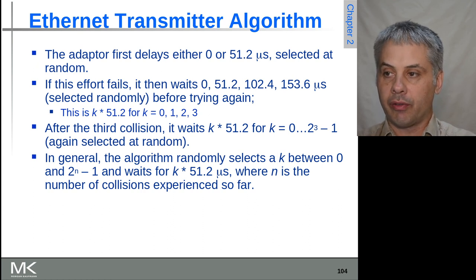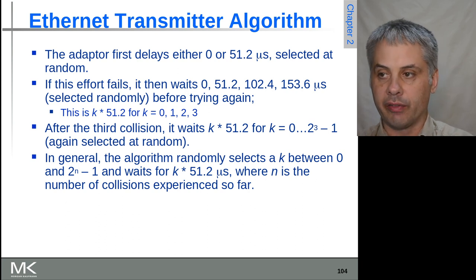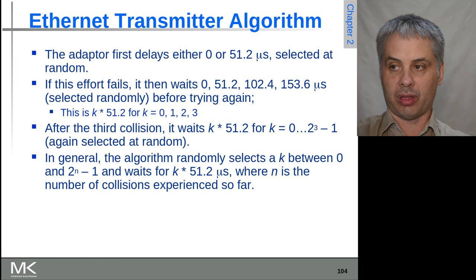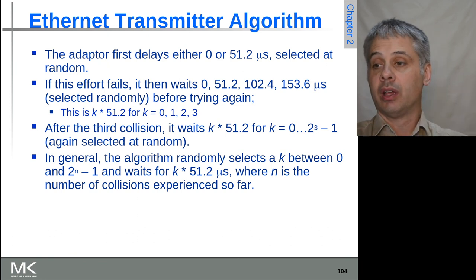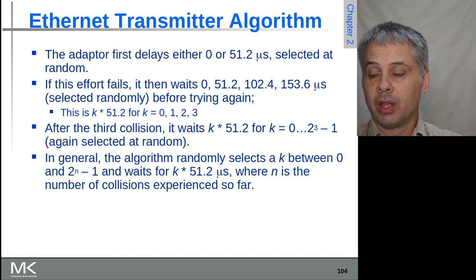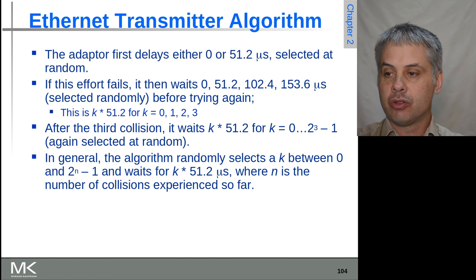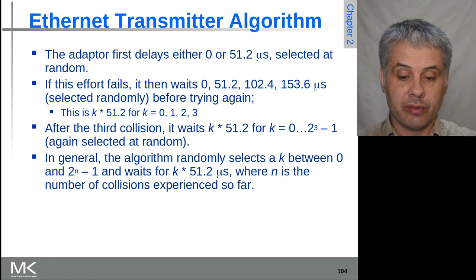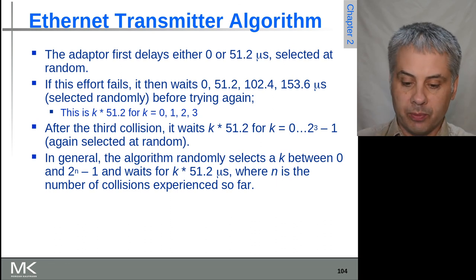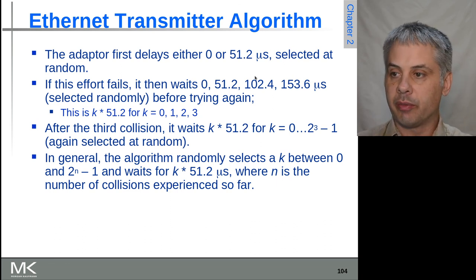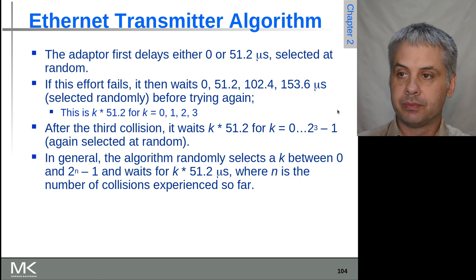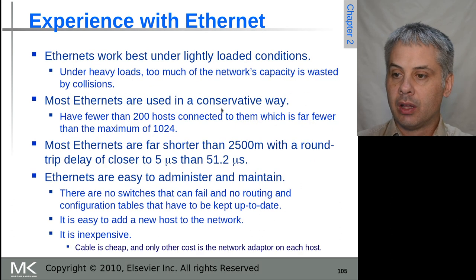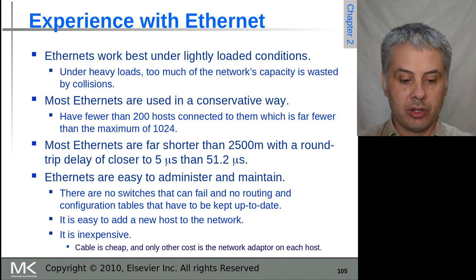Now it has four choices up to a larger value, so again the probability of both adapters still choosing the same value on the second try is now one in four. At the third collision, there are now eight time slots possible, so again the probability drops off by half at each point. So after a few intervals, it's almost certain that the transmission will have been able to continue. Okay, and we'll continue that in the next video.